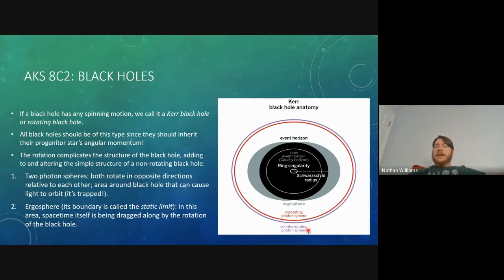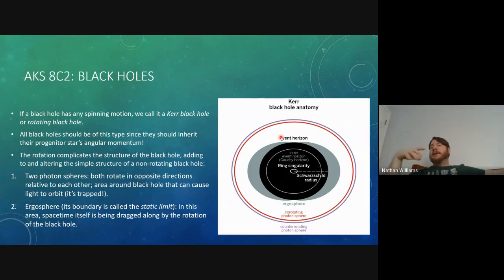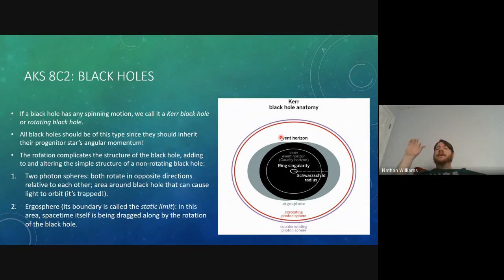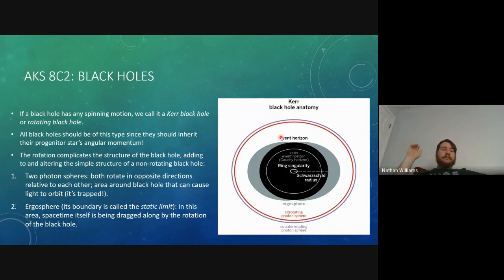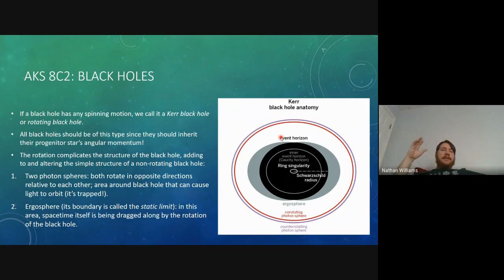The two photon spheres are called the co-rotating and counter-rotating photon spheres. The counter-rotating photon sphere is the outermost, where light orbits in the opposite direction of the black hole's rotation. Closer in is the co-rotating photon sphere, where light orbits in the same direction as the black hole. Both layers trap light, but they move in opposite directions.